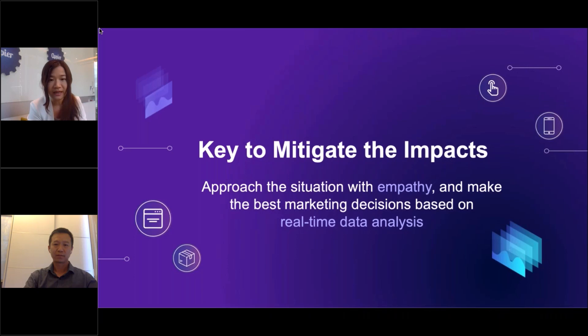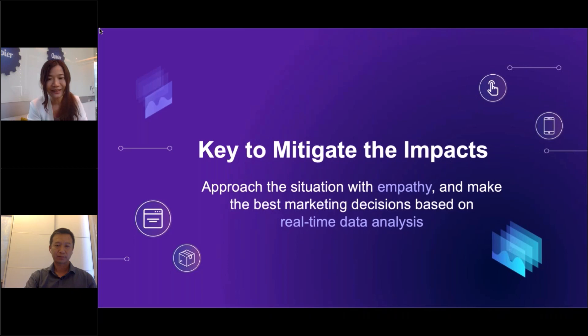Before handing over to Chelsea for more detail, I want to summarize what we've observed across hundreds of companies studied over the past few weeks. The key to mitigating this impact comes down to two things. First: approach the situation with empathy — no matter how smart the marketing or how well inventory is controlled, the core value is always keeping empathy toward consumers and the situation. Second: make fast marketing decisions based on real-time data analysis. I now invite Chelsea to share more insights from the data expert side.